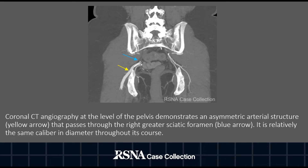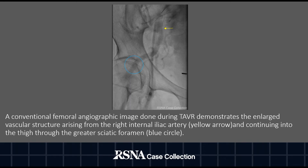A conventional femoral angiographic image done during TAVR demonstrates the enlarged vascular structure arising from the right internal iliac artery, highlighted with the yellow arrow. It continues into the thigh through the greater sciatic foramen, which has been highlighted with the blue circle.